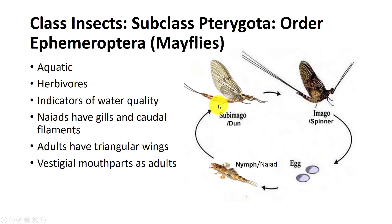The naiad develops wings and it becomes a sub-imago. Mayfly sub-imagos are a tasty treat for some fish, so fly fishermen make use of mayfly hatches by choosing artificial fishing flies that resemble the species in question. Once they molt, they go into the imago stage. They mate, lay eggs, and die. So quick is the adult stage that the adults do not feed and only have vestigial mouthparts.